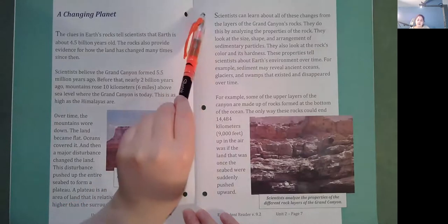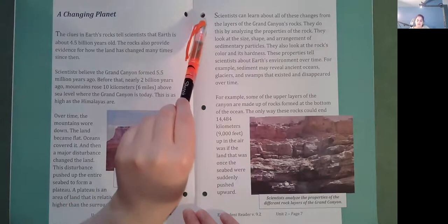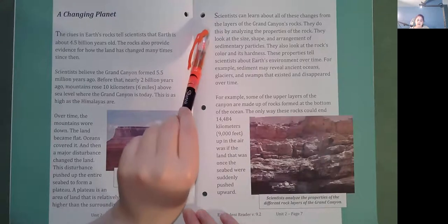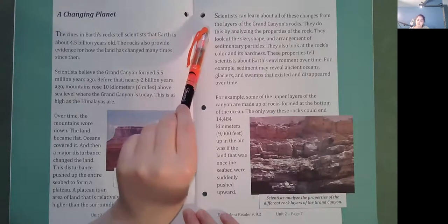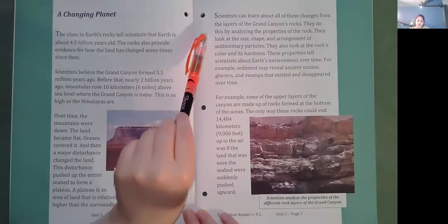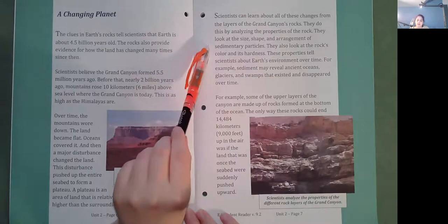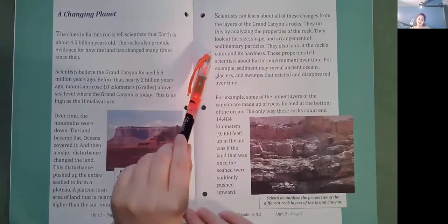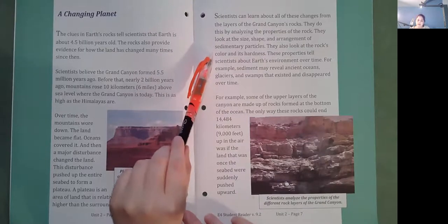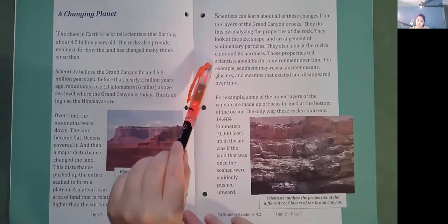Scientists can learn about all of these changes from the layers of the Grand Canyon's rocks. They do this by analyzing the properties of the rock. They look at the size, shape, and arrangement of sedimentary particles. They also look at the rock's color and its hardness. These properties tell scientists about Earth's environment over time.